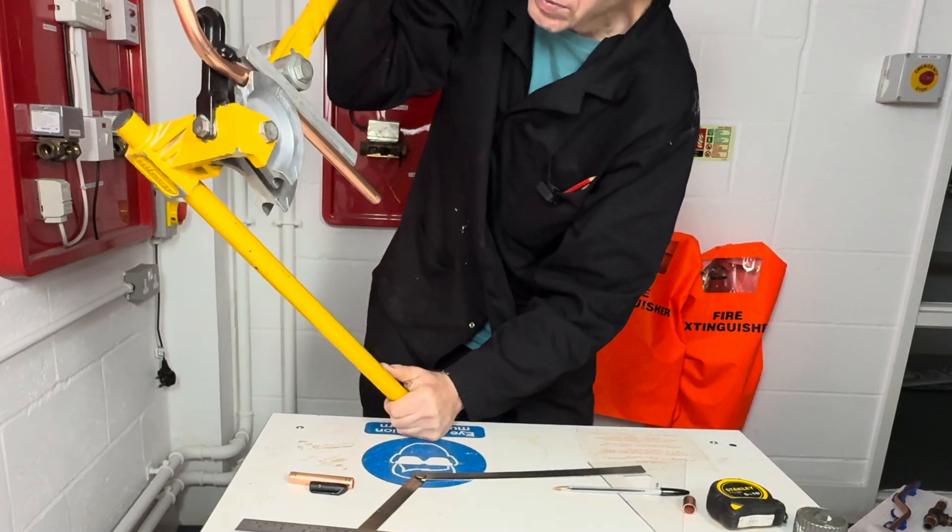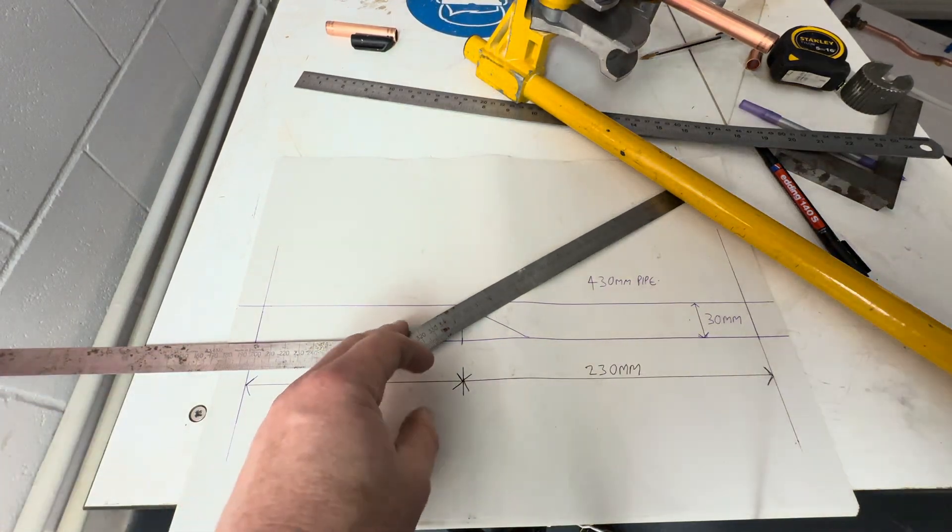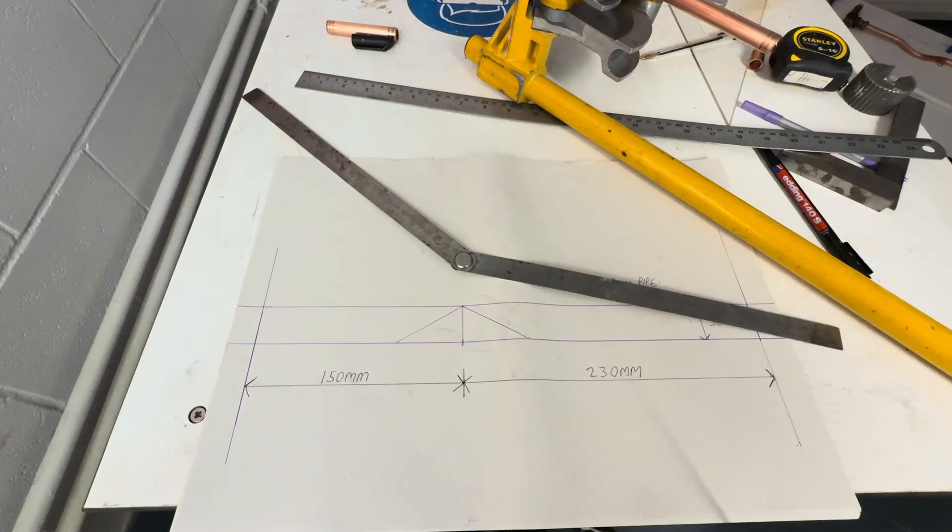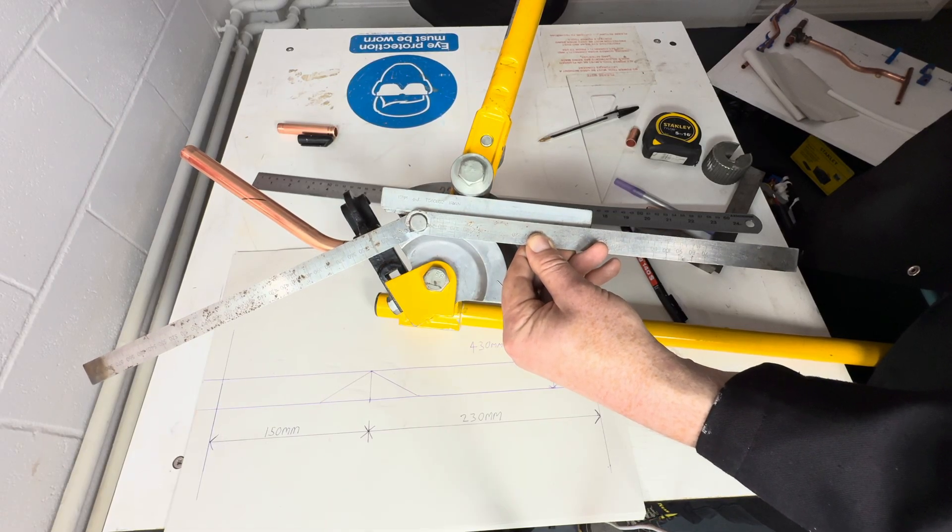But because we want to get it right, we're not going to trust the marks. We're going to verify it using our folding ruler. So take that 30 degrees there.